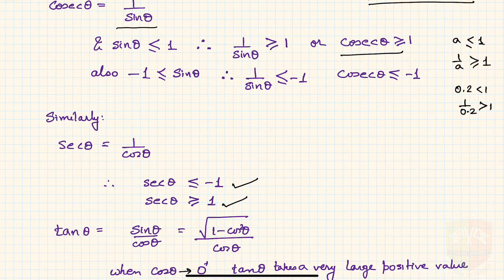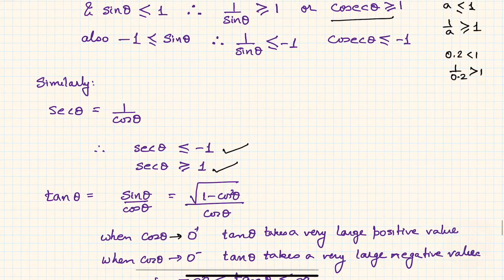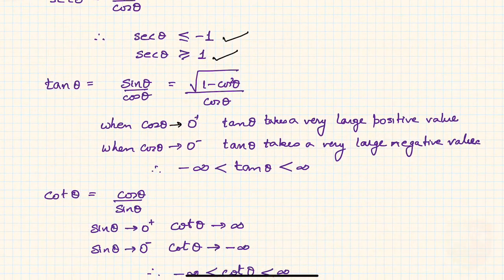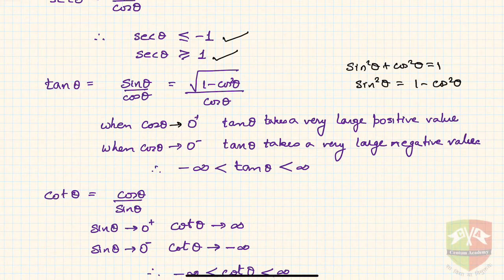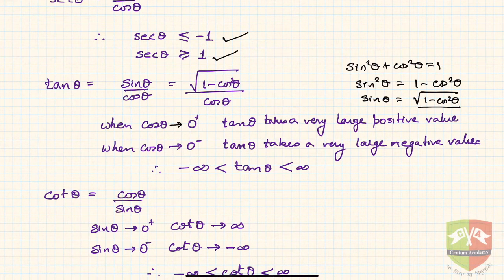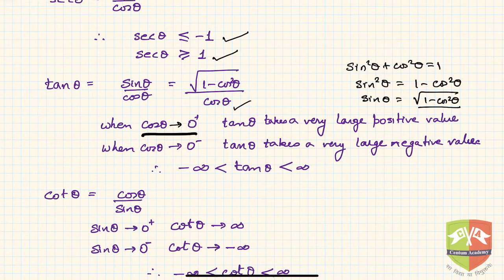Now let's discuss tan theta. Tan theta equals sinθ/cosθ, which can be written as √(1 − cos²θ)/cosθ. This is because sin²θ + cos²θ = 1 means sin²θ = 1 − cos²θ, so sinθ = √(1 − cos²θ). We have now expressed sine in terms of cosine, giving us tan θ = √(1 − cos²θ)/cosθ.